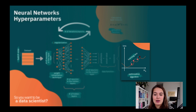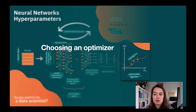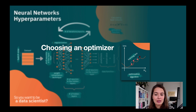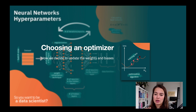Next is the optimization algorithm and the learning rate — my favorite topic. Choosing an optimizer is critical for your neural network. We'll see more details on how and why later, but essentially it tells us how to update the weights and biases: should I increase this one or decrease this one?